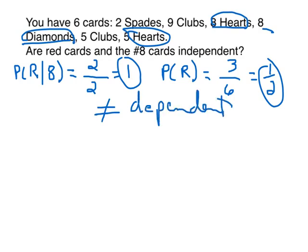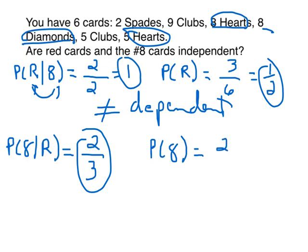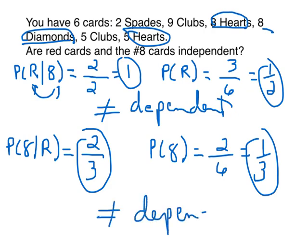I want to prove that if we had reversed this and made red the condition, it would still work. Cards that are red and number eight for the numerator — there are two of them. How many red cards are there? Three. So the probability is two-thirds. Now compare this to the probability without the condition red — just probability of eight. How many cards have a number eight? Two, out of a grand total of six, which is one-third. The two probabilities don't equal, so it's dependent. Even though the numbers turned out different, the result is the same.